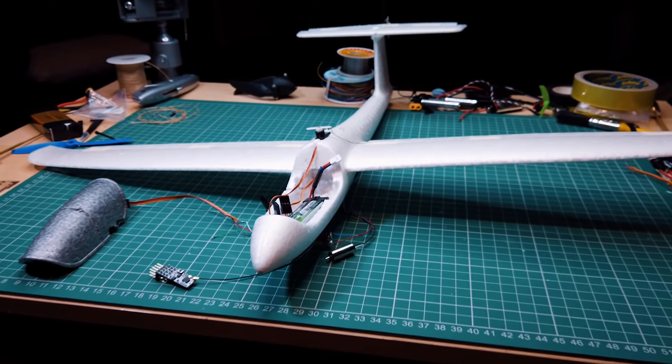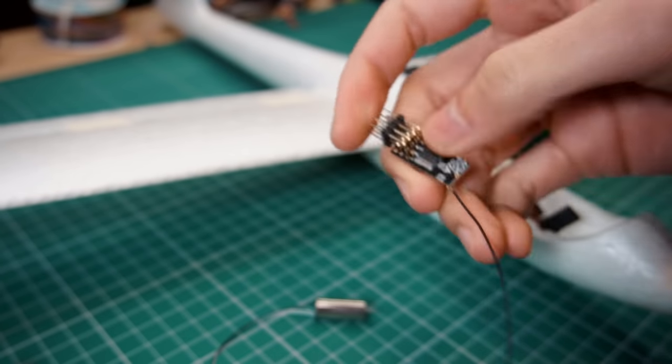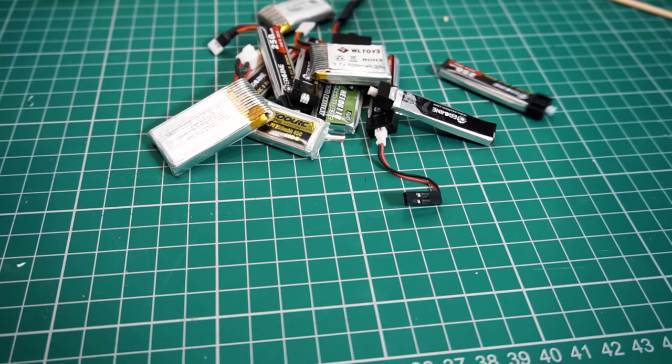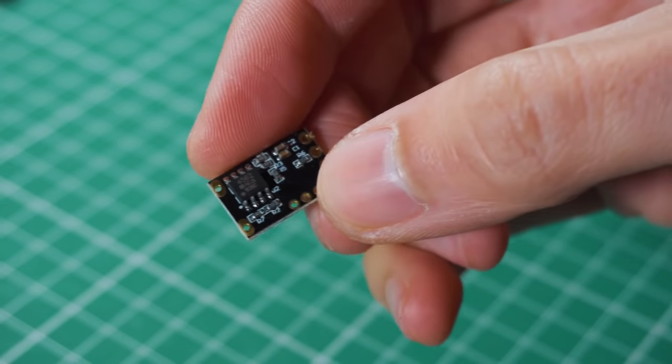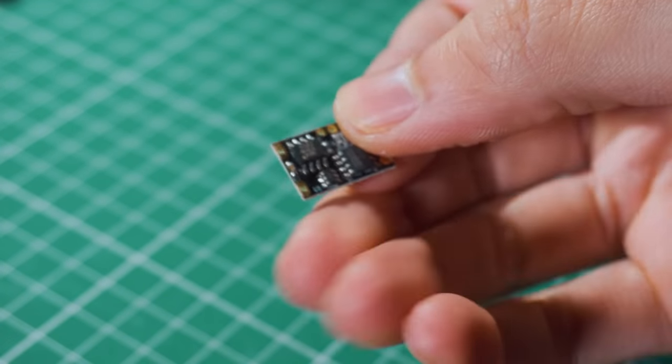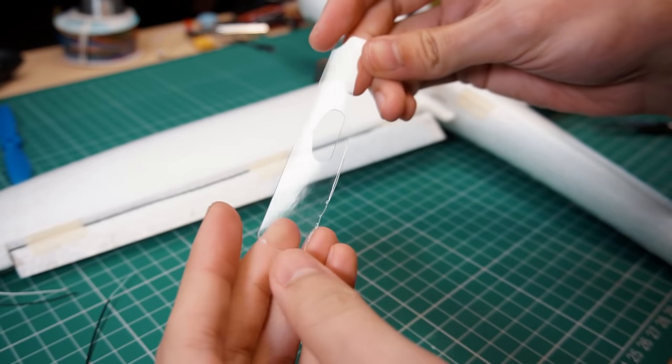To maintain everything as light as possible we're going to use this micro receiver, and because the whole system will use low voltage we're going to use one cell lipo batteries. I'm also going to use this mini speed controller for brushed motors. The list of components that I'm going to use can be found in the description of this video.